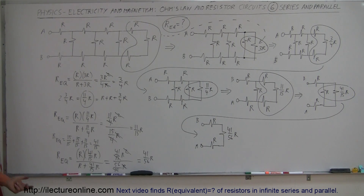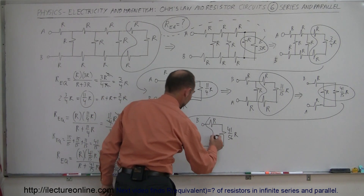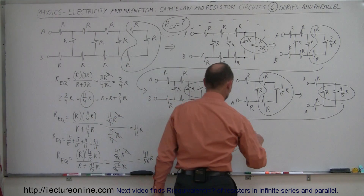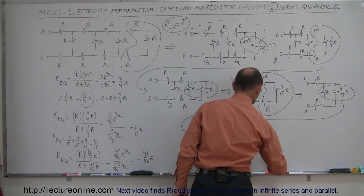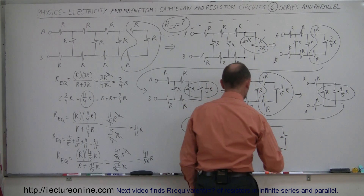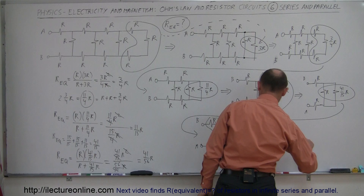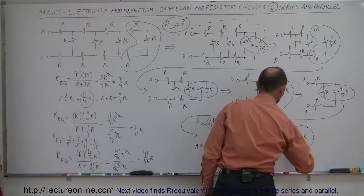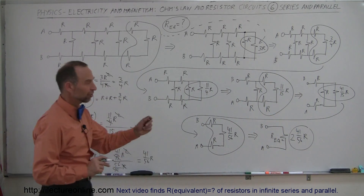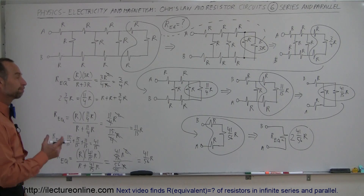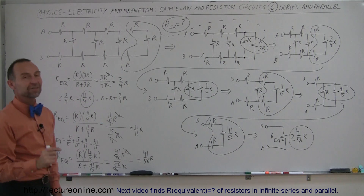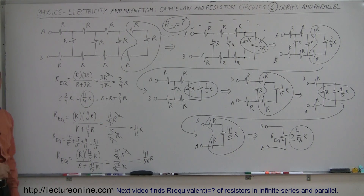Now what we have to do is add those three combined — they're now in series, so we simply add them up. We now end up with a single equivalent resistor. Here are the terminals A and B with a single resistor representing the whole circuit, and that would be 2 and 41/56 R — that would be the equivalent resistance of the circuit. That one single resistor of this value can replace this entire circuit and give you the exact same electrical properties. That's how you do it.